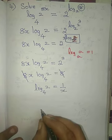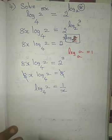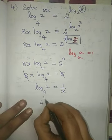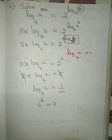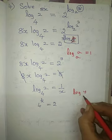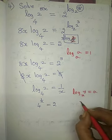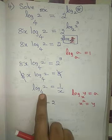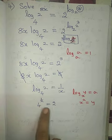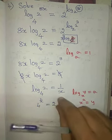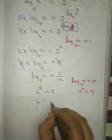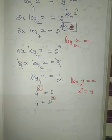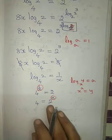Using the exponential formula — if log y to the base x equals a, then in exponential form x to the power a equals y — I can write it as 4 to the power 1 by x equals 2. Now bringing the exponent to the other side: 4 equals 2 to the power x, because 1 by x becomes reciprocal x.